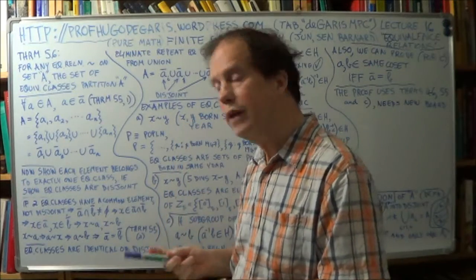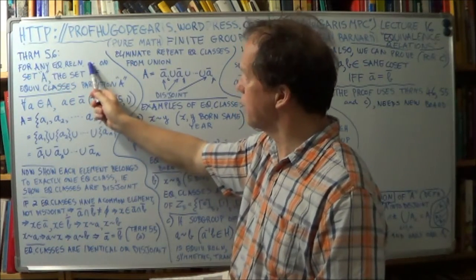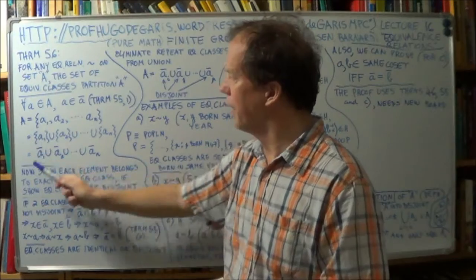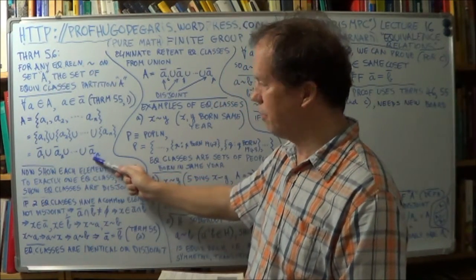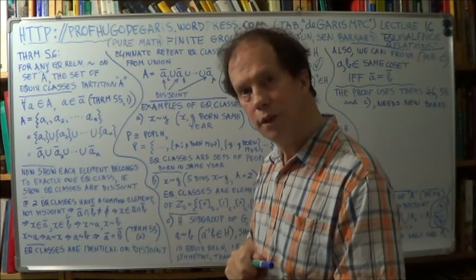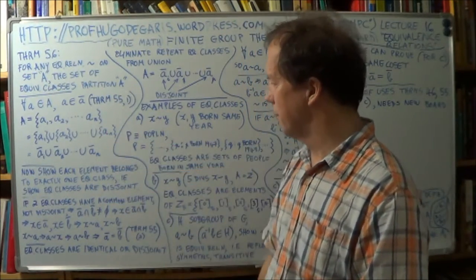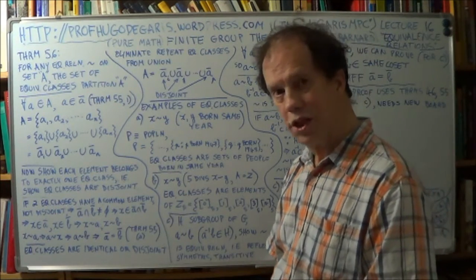Partition. So, this equivalence relation has effectively partitioned your set A into the union of disjoint residue classes. So, an important result, and we will use that certainly in the next chapter.